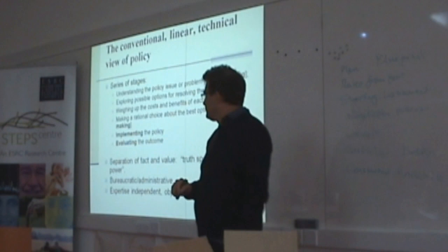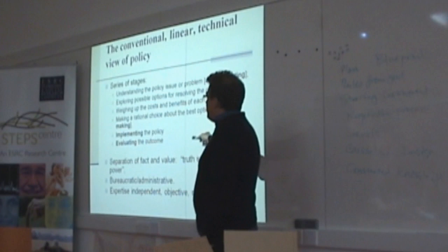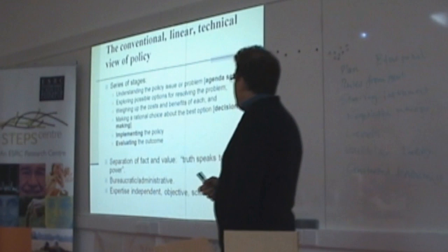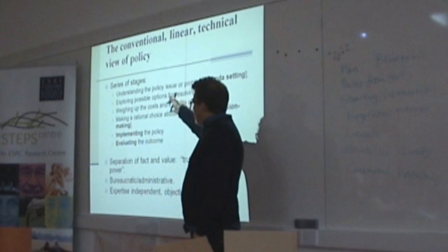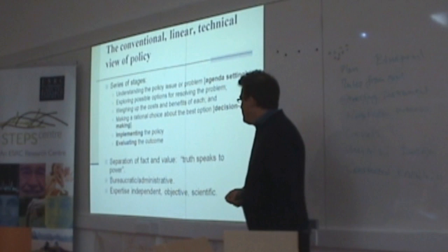In the end, a rational choice is made about the best option. Then the policy is implemented, you evaluate the outcome, and round it goes. You'd be surprised how often this model of policy-making is presented as the way things happen. But of course, this gives extra weight to a particular form of rational policy-making, and the particular relationship between science and policy, which is rather problematic.